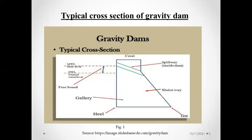The water present at the left part, the upstream side, is called headwater. After the water is released, some water remaining downstream is called tailwater. We get three to five meters of freeboard since we need to store a large amount of water.